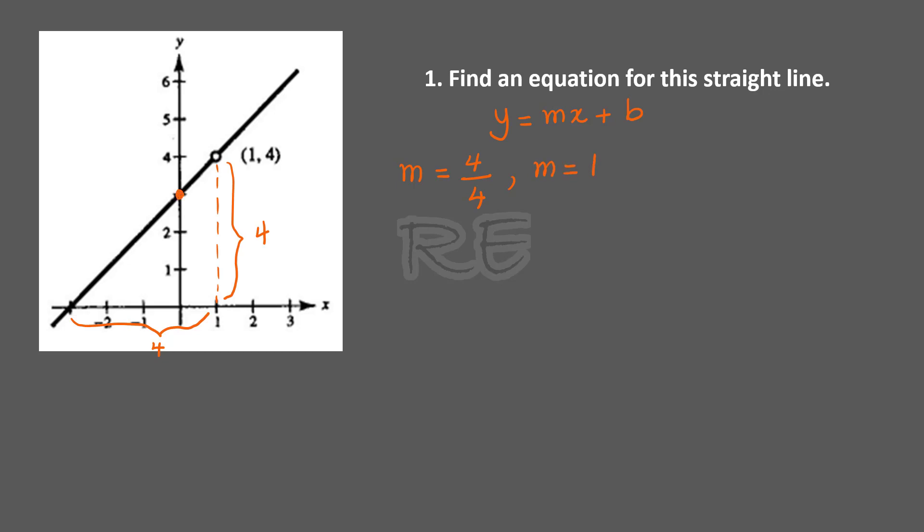Now the y-intercept, the point at which the line crossed the y-axis, is 0, 3. Therefore, b is equal to 3.